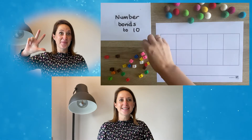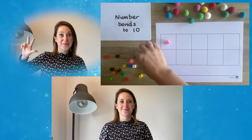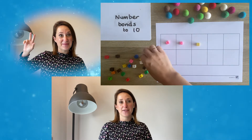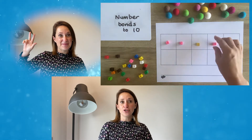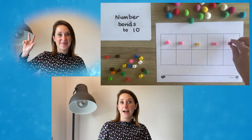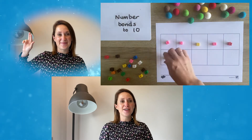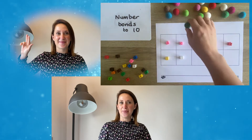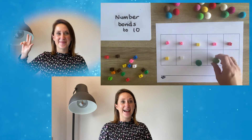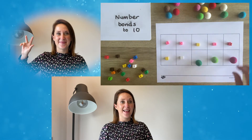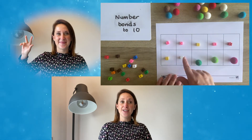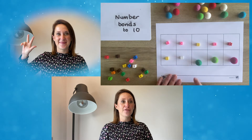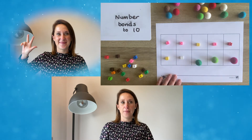Number bonds to 10. Using two different types of items, children can find all of the different number bonds to 10, for example seven and three. There are seven cubes and there are three pom-poms.